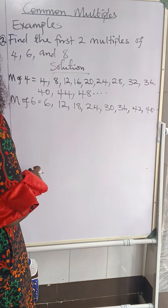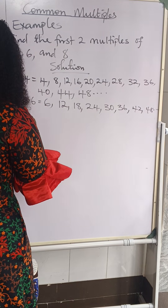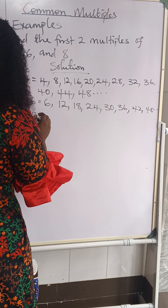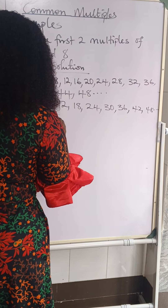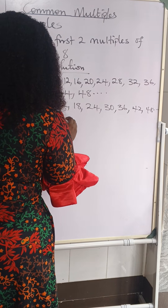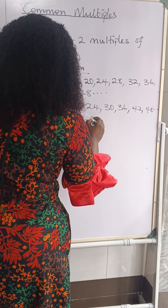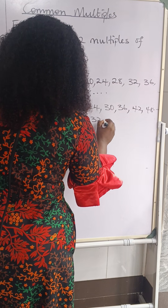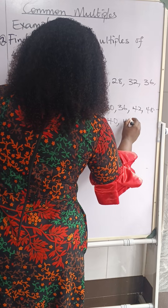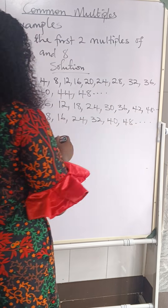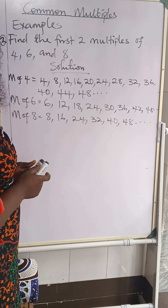Now we go over to multiples of eight. Counting in eights: eight, sixteen, twenty-four, thirty-two, forty, forty-eight, and so on.